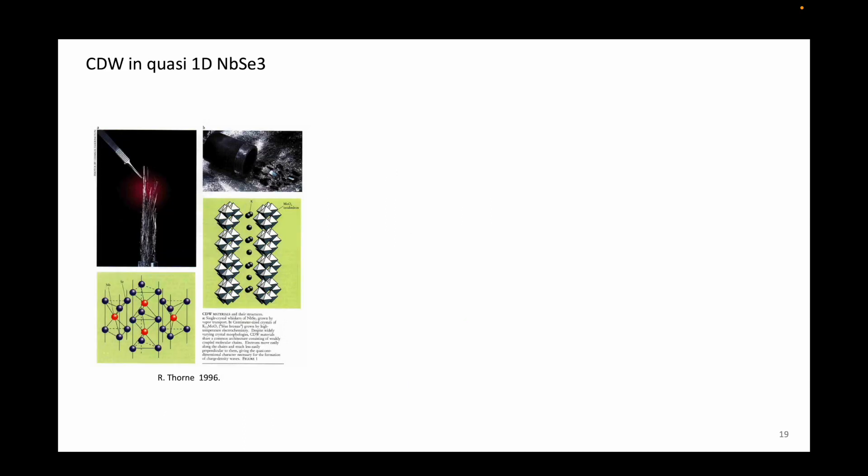Now, let's consider a quasi one-dimensional material such as niobium triselenide. Niobium triselenide is a quasi one-dimensional material, so instead of having a chain of atoms forming a metal, it is a quasi one-dimensional crystal with van der Waals gap in two of the three dimensions with a finite width.